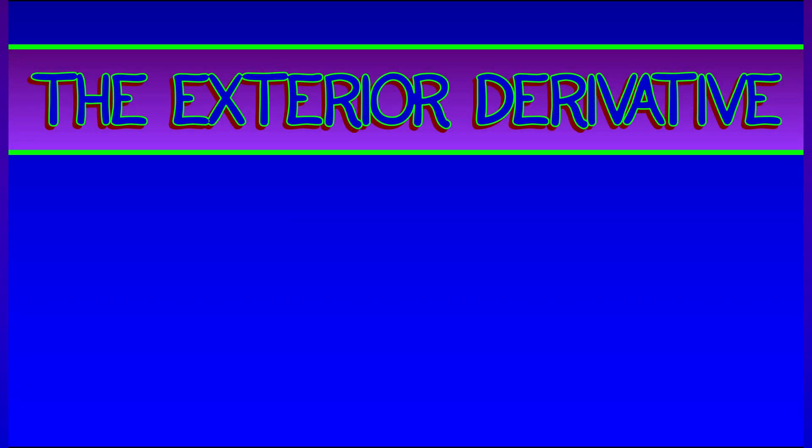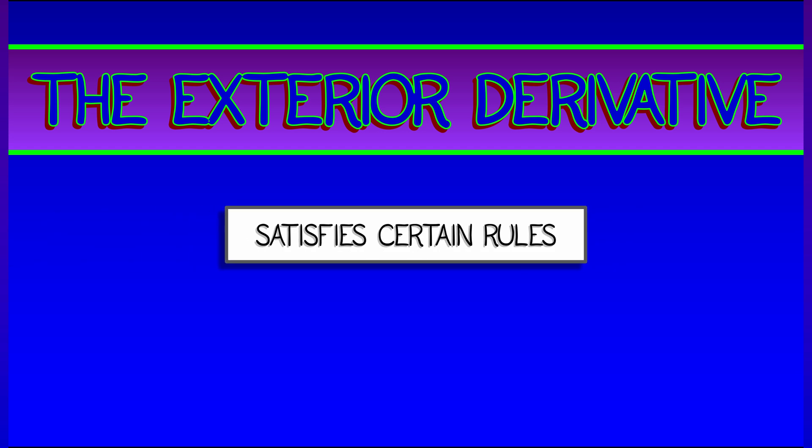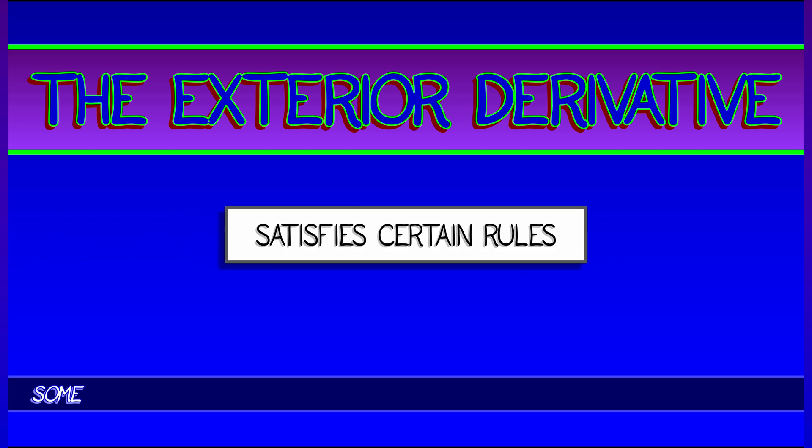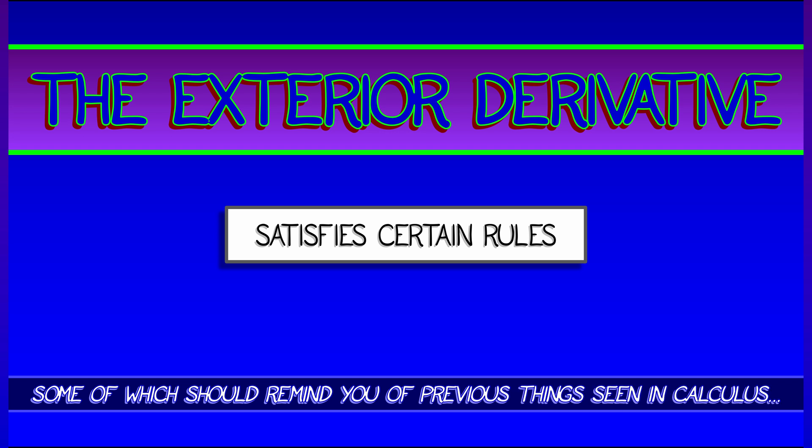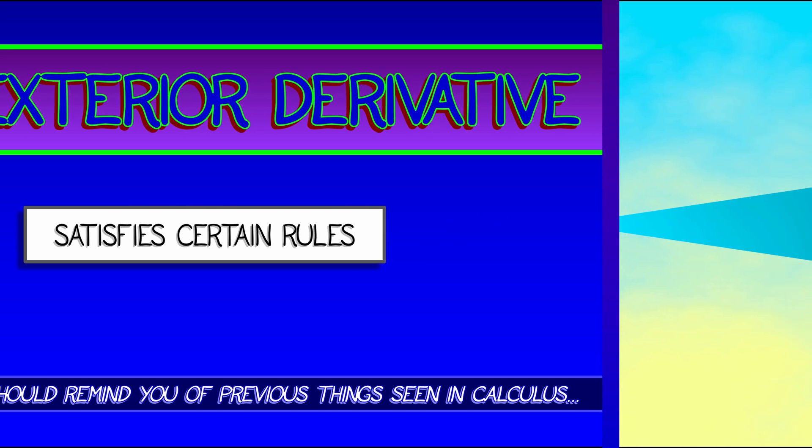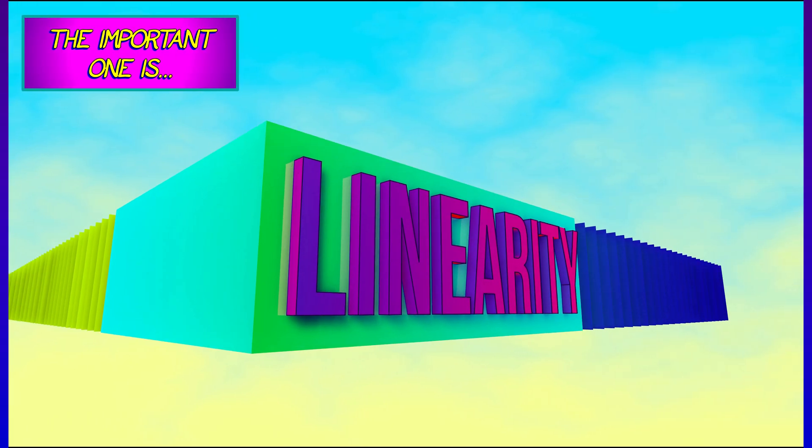The derivative on form fields, that is the exterior derivative, satisfies certain differentiation rules, some of which are going to remind you of things that you've seen before in calculus. But of course, the most basic elementary rule is that of linearity.